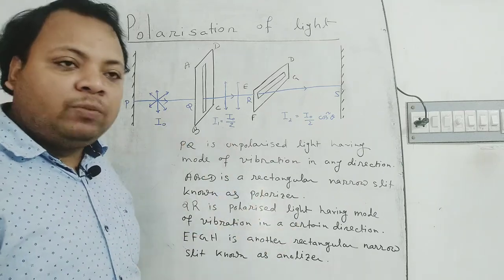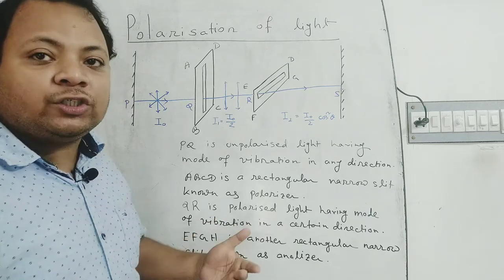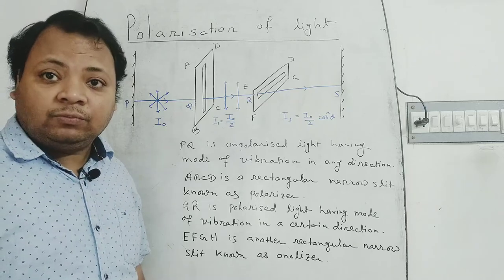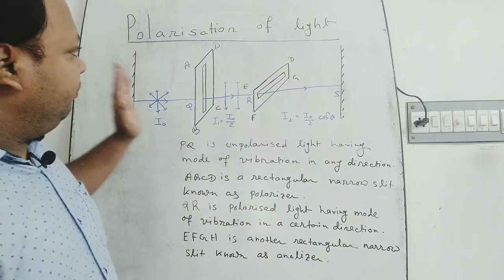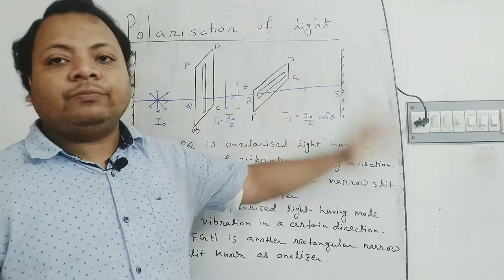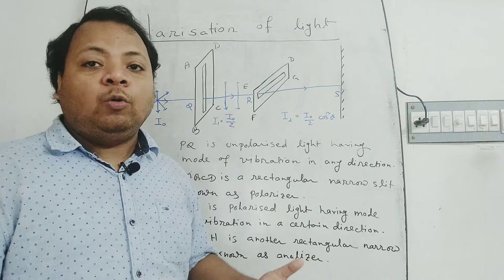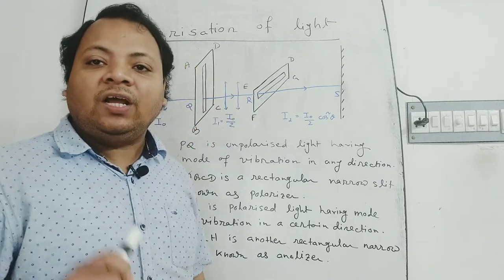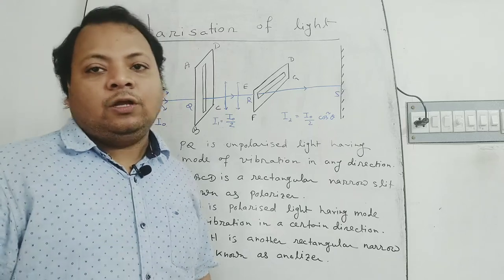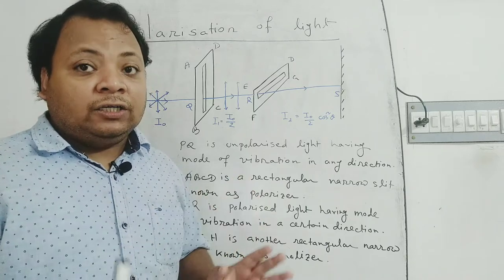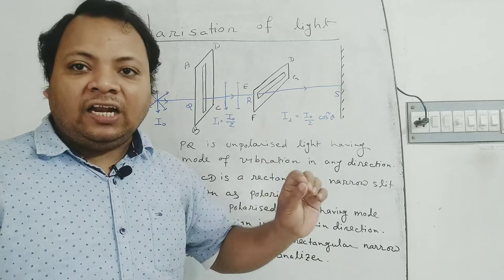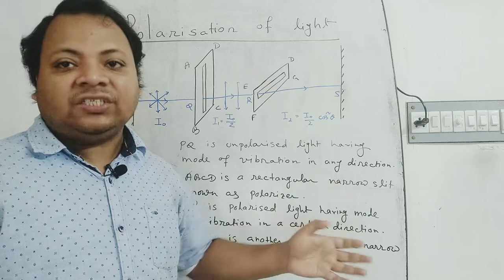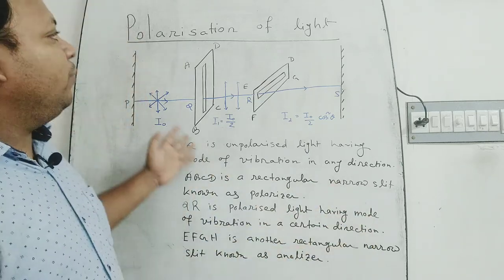Therefore, we can say that applying two slits, we can change the mode of vibration of the particles in a transverse wave, since we know that a straight string produces a transverse wave. By this phenomenon we can recognize the transverse wave. The intensity of the wave can change or vary due to the position of the two slits. This phenomenon is known as polarization. Due to the position of the polarizer or analyzer, the mode of vibration of the particles of a transverse wave can be restricted in a certain plane. In case of light wave, this phenomenon is known as polarization.